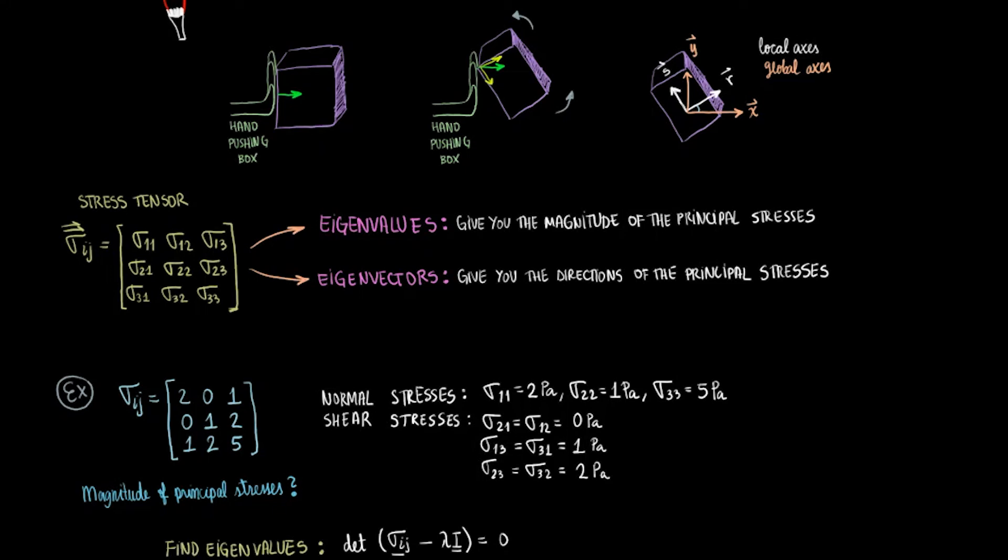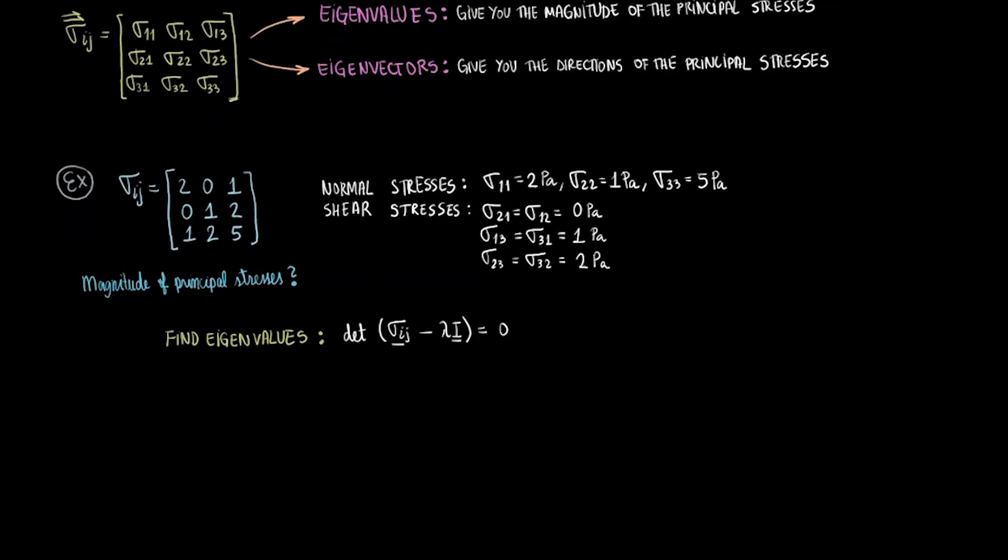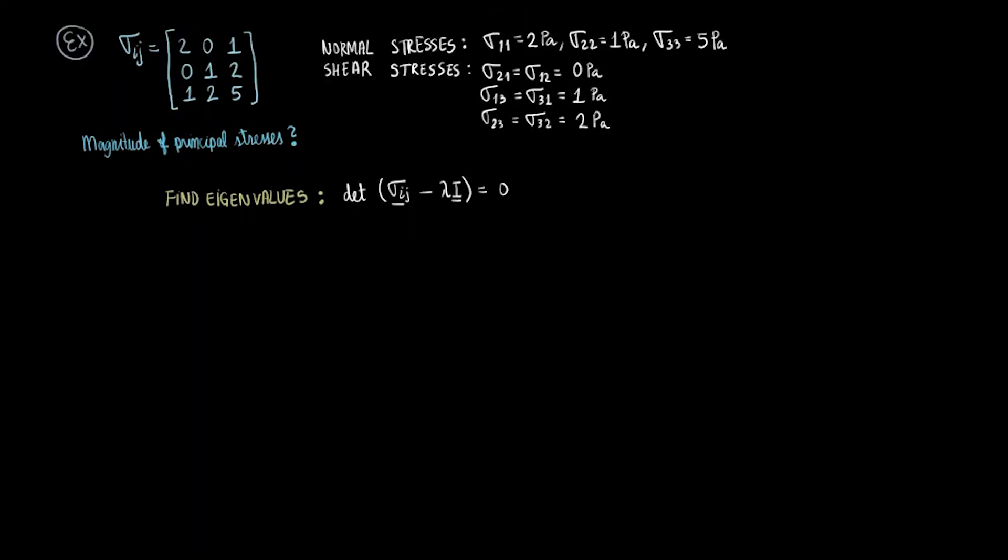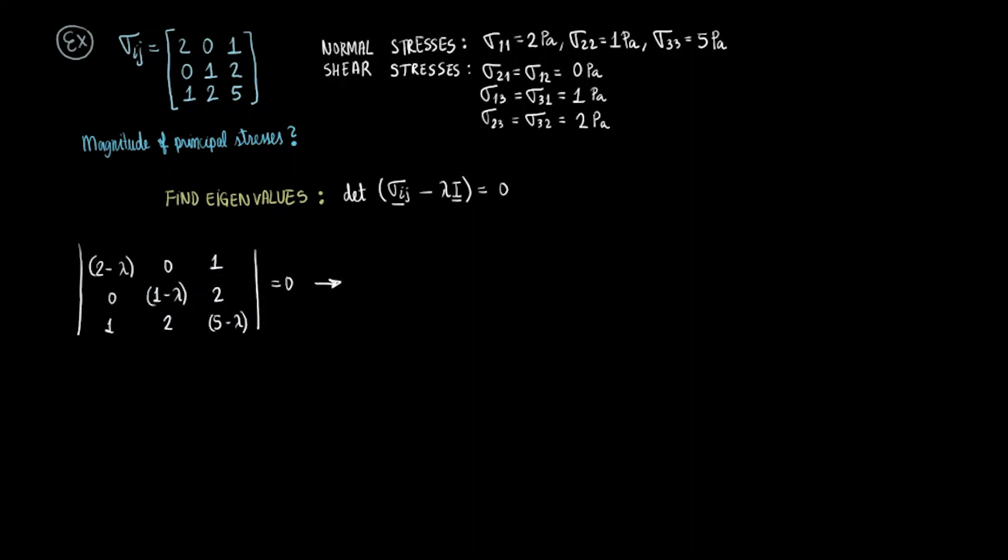Now to find the magnitude of the principal stresses, we need to find the eigenvalues. We can get the eigenvalues by solving this characteristic equation. Subtract 1 lambda from the diagonal components and take the determinant. Feel free to pause to check the math if you need a refresher.